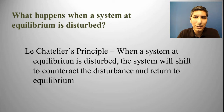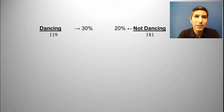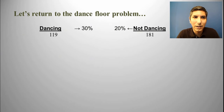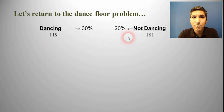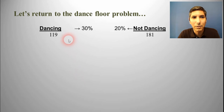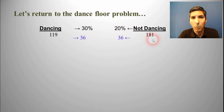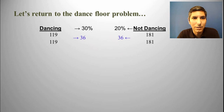In order to illustrate this, let's take a look at the same thought experiment that we looked at way back in Section 1 of this unit, and that is the dance floor problem. You might remember that we had a dance — maybe it's a prom, homecoming, or something — and there were 300 people at this dance. We found that after every song, 30% of the people who were dancing sat down, and likewise, 20% of the people who weren't dancing got up and started dancing. Once we did that for a few songs, we found an equilibrium where 30% of 119 is 36, and 20% of 181 is also 36, so you have a net change of zero. As long as this dance continues, you'll always have 119 people on the dance floor and 181 people that are not dancing.